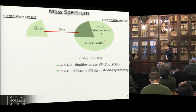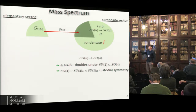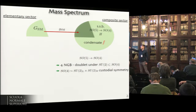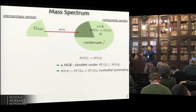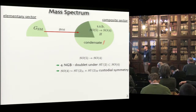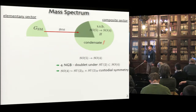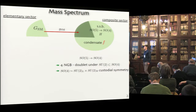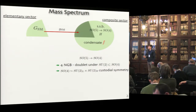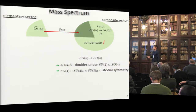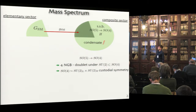The general picture has the composite sector, containing completely new particles apart from the Higgs, and the standard model containing everything we know, with the Higgs supposed to be elementary. They interact via some coupling. The strong sector condenses at scale F and produces the Higgs as a Goldstone boson. For particular examples I assume the minimal spontaneous symmetry breaking pattern SO5 to SO4, which gives four Goldstone bosons forming a Higgs doublet and respects custodial symmetry.